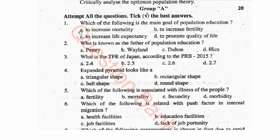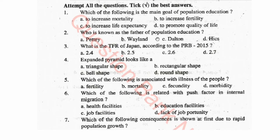Options: (a) To increase mortality, (b) to increase fertility, (c) to increase life expectancy, (d) to promote quality of life. Question 2: Who is known as the father of population education?